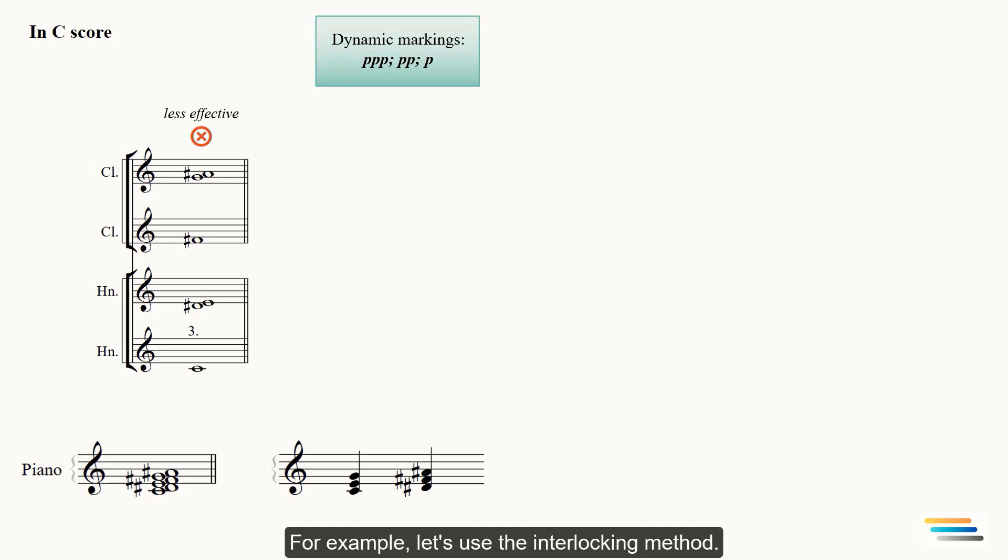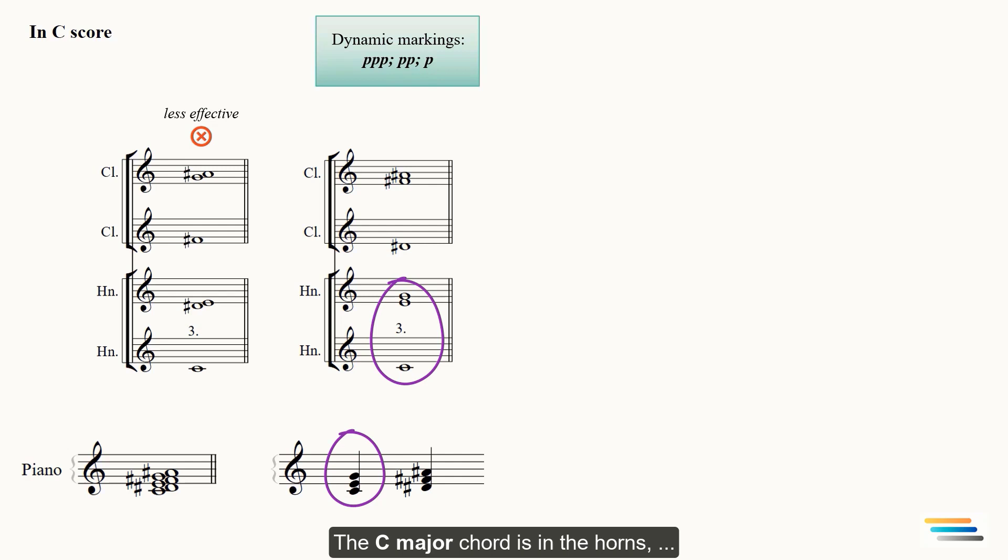For example, let's use the interlocking method. The C major chord is in the horns, while the D sharp minor will be played by three clarinets.